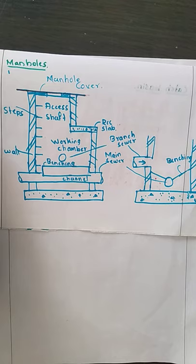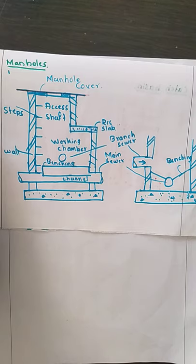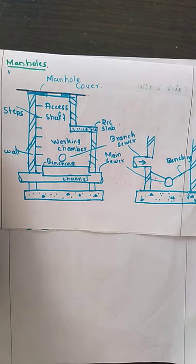Shallow manholes are provided at a depth of around 0.75 to 0.9 meter. Wherever there is a depth of around 0.75 to 0.9 meter, we are going to provide the shallow manhole. They are constructed at the start of the branch sewer. Branch sewers are also known as the inspection chamber.